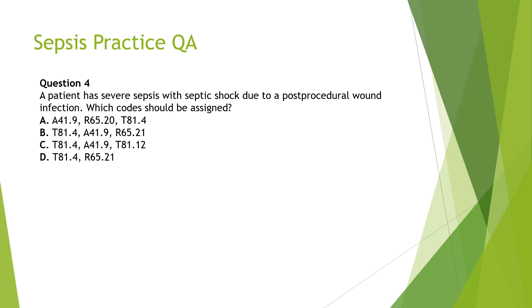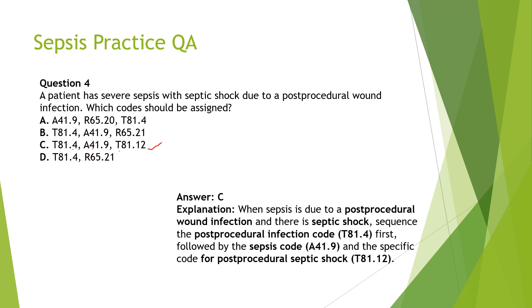Question 4: A patient has severe sepsis with septic shock due to a post-procedural wound infection — which code should be assigned? This involves the post-procedural coding guideline: the primary code is the post-procedural infection (T81.4 series), next we code sepsis unspecified, and last we code severe sepsis with septic shock. There is also code T81.12 for post-procedural septic shock. The correct answer is option C: T81.4 (post-procedural infection), sepsis unspecified, then R65.21 (severe sepsis with septic shock).